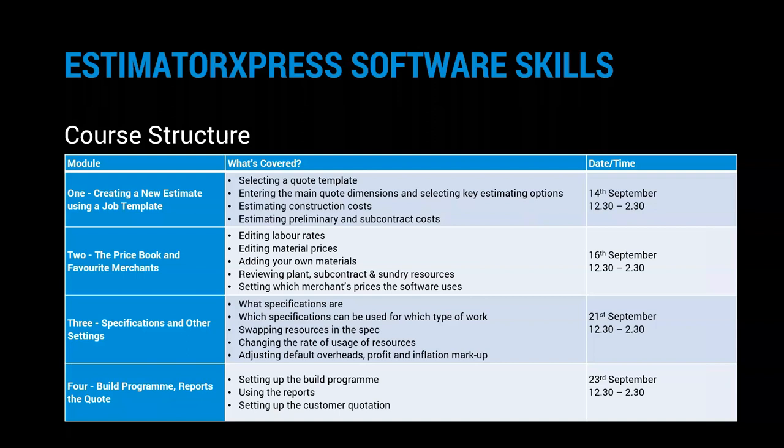Module three will be next Tuesday the 21st of September. We'll look at what specifications are in the software, what their function is, the different specifications and what type of work you'd use them for. I'll talk you through tailoring the specifications to the way you like to work — swapping in different resources, different materials, changing the usage factor, the rates of usage of resources. I'll also touch on how you can set your default overhead, profit and inflation rates within the software. The final module is all about the output side: the build programme, the Gantt chart, data reports and the customer quotation feature, which we'll go through on the 23rd of September.